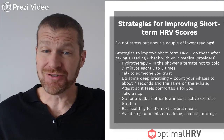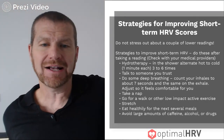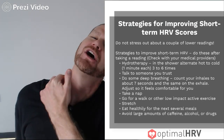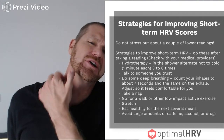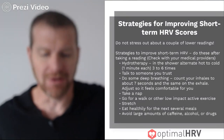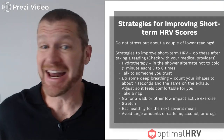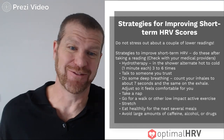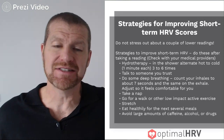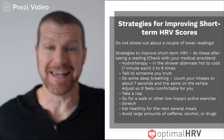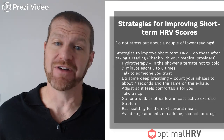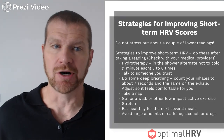Stretch — a really good stretch is to hold one arm behind your back, have the other arm grab that hand, and lean over to the side to get a good stretch on your neck. This stretches the vagal nerve, which helps heart rate variability. Simple stretching, even touching your toes, is beneficial. If you have access to yoga, that's also really good. Try to eat healthy over the next several meals, as there's a big connection between diet and heart rate variability. Avoid large amounts of caffeine, alcohol, or drugs, as those will have a very negative impact on short-term HRV scores.